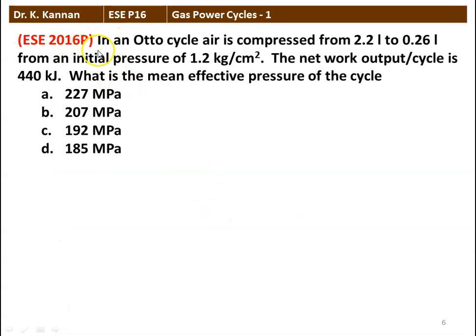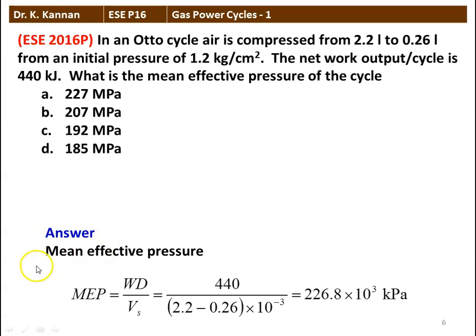The next question, again from the 2016 question paper. In an Otto cycle, air is compressed from 2.2 liters to 0.26 liters from an initial pressure of 1.2 kg/cm². The net work output per cycle is 440 kilojoules. What is the mean effective pressure of the cycle? Mean effective pressure MEP equals work done divided by the swept volume. Work done is 440 kilojoules divided by (2.2 minus 0.26) liters, converting to cubic meters by multiplying by 10 to the power minus 3. Solving, it gives 226.8 into 10³ kPa, so the answer is approximately 227 kPa. Option A is the correct answer.